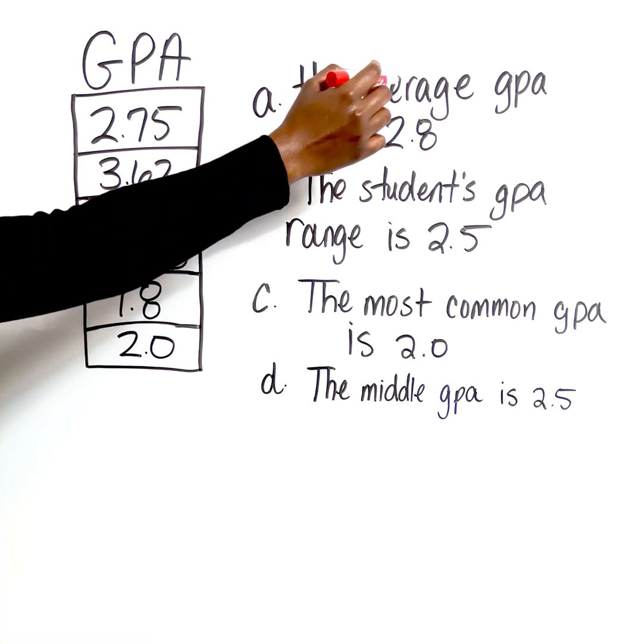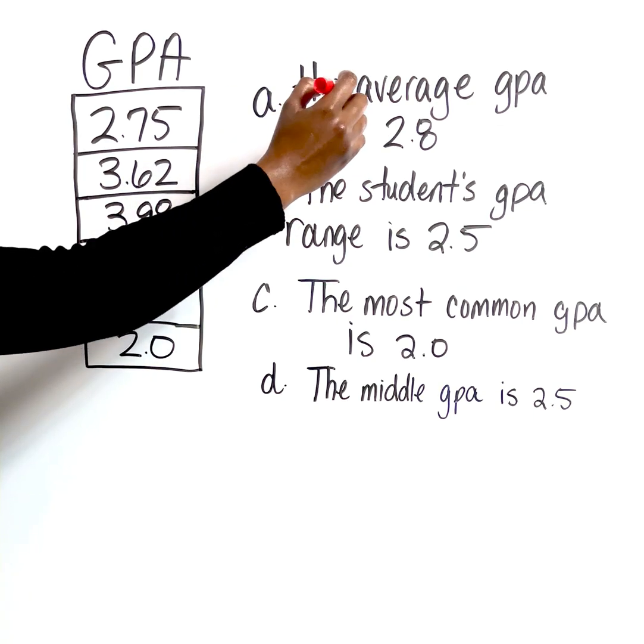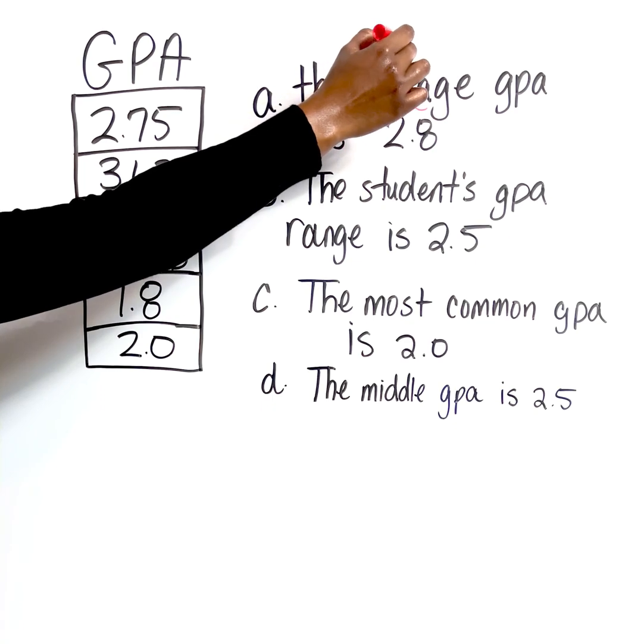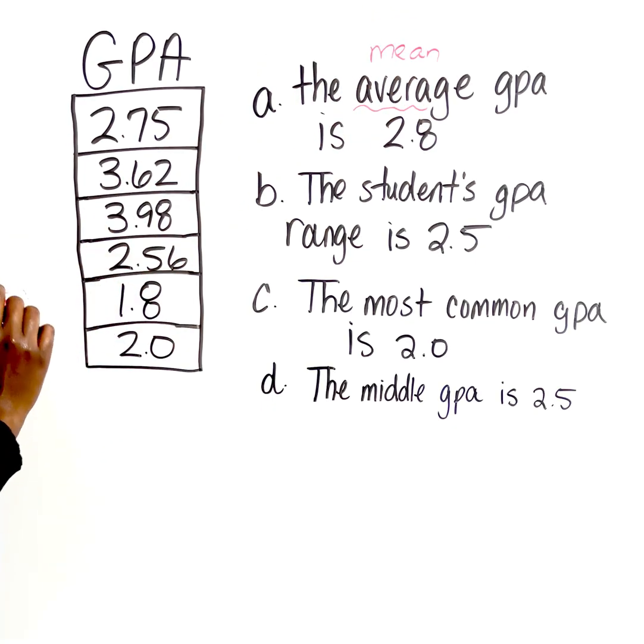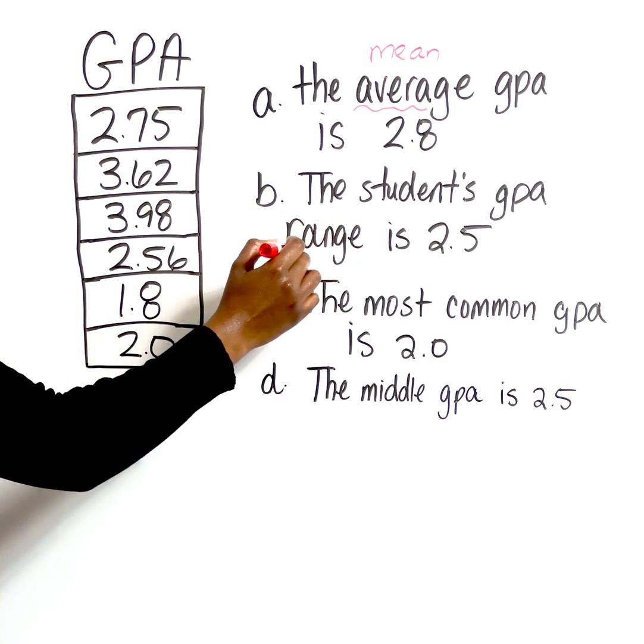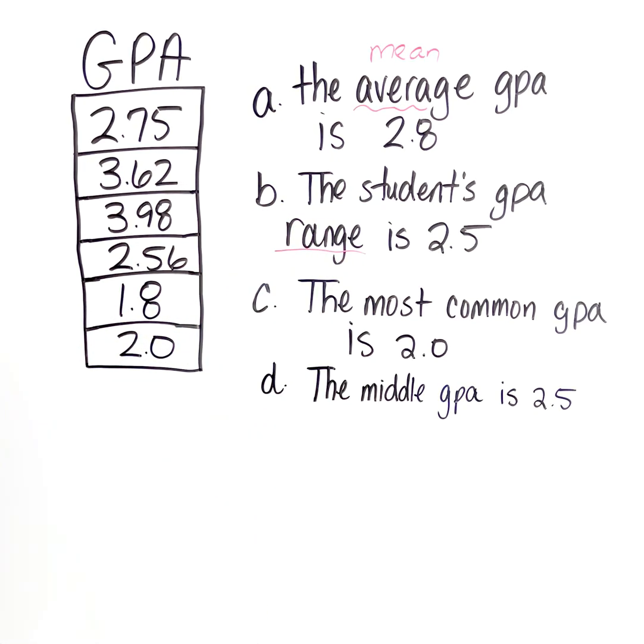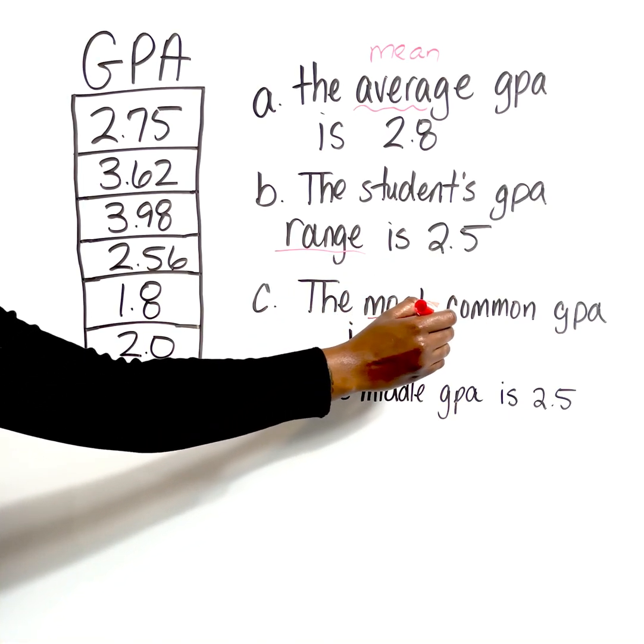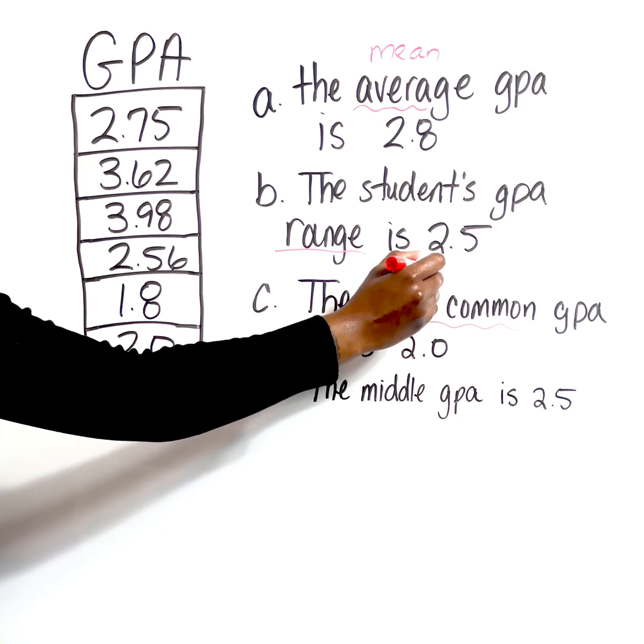So A says, the average GPA is 2.8. Well, we know the word average is equivalent to what? The mean. It says the student's GPA range is 2.5. So of course, we know how to calculate the range. C says the most common GPA is 2.0. We know most common is the same as what? The mode.